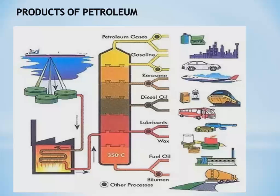The products of petroleum, obtained when fractional distillation takes place — that is, when crude oil is sent through the furnace at different temperatures — include: petroleum gases (LPG), gasoline (petrol), kerosene, diesel oil, lubricants, wax, fuel oil, and bitumen.